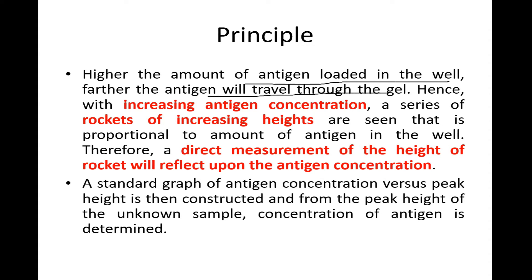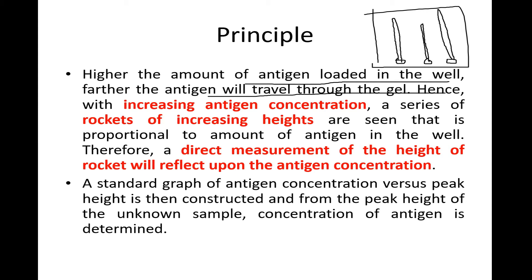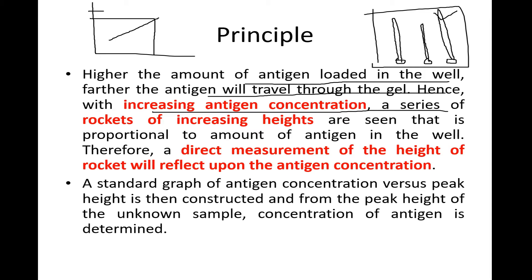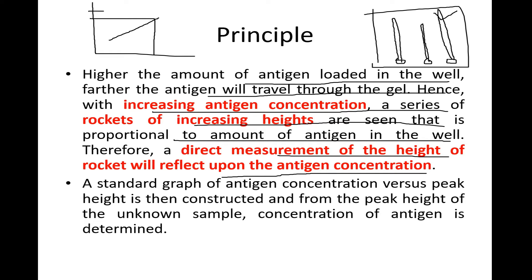Higher the antigen loaded in the well, further the antigen will travel through the gel. So farther they travel, the greater the concentration of that particular antigen. With increasing antigen concentration, a series of rockets of increasing heights are seen, proportional to the amount of antigen in the well. A direct measurement of rocket height reflects antigen concentration.